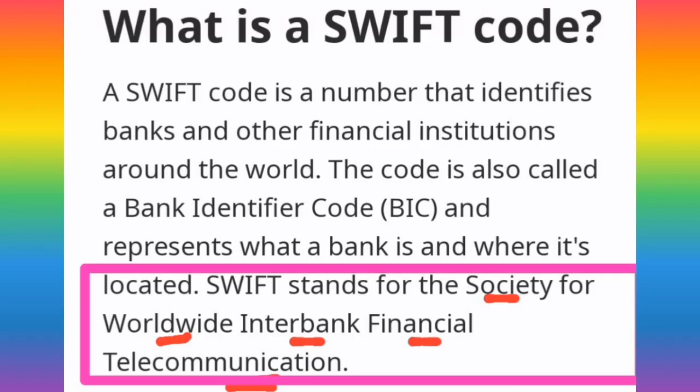A SWIFT code is a number that identifies banks and other financial institutions around the world. The code is also called a bank identifier code, BIC, and represents what a bank is and where it is located.